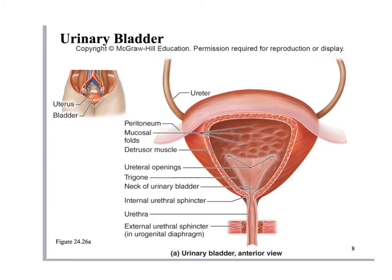The ureters attach to the posterior surface of the bladder and enter it, producing two holes along with a third exit hole — the urethra. Those three points create an imaginary area called the trigone, which functions as a funnel to channel urine out through the urethra so that when the bladder contracts, urine is pushed out, allowing for complete emptying of the bladder at urination.